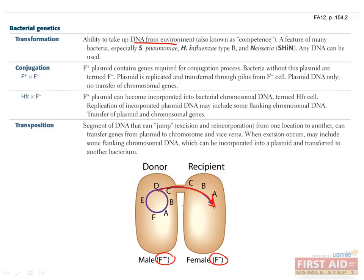The F-plasmid itself carries all the genes necessary to facilitate its own transfer. When the F-plasmid becomes incorporated into the bacterial chromosome, the bacterium becomes a high-frequency recombination cell, or HFR. This HFR cell now has the ability to transfer whole pieces of chromosomal material into a recipient bacterium.